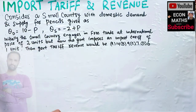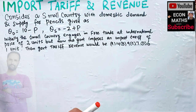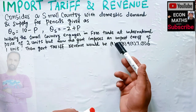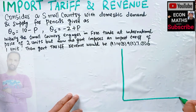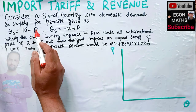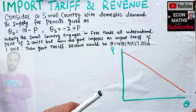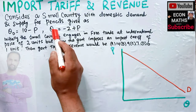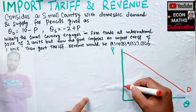So this is our domestic demand and supply. We are told that if this country engages in free trade at an international price of two units and the government imposes an import tariff, what will be the tariff revenue? Let's draw the graph. We have quantity on the horizontal axis and price on the vertical axis. Our domestic demand curve — when Q = 0, price will be 10, so the intercept is at 10. This is our domestic demand curve. For domestic supply, when Q = 0, P = 2.